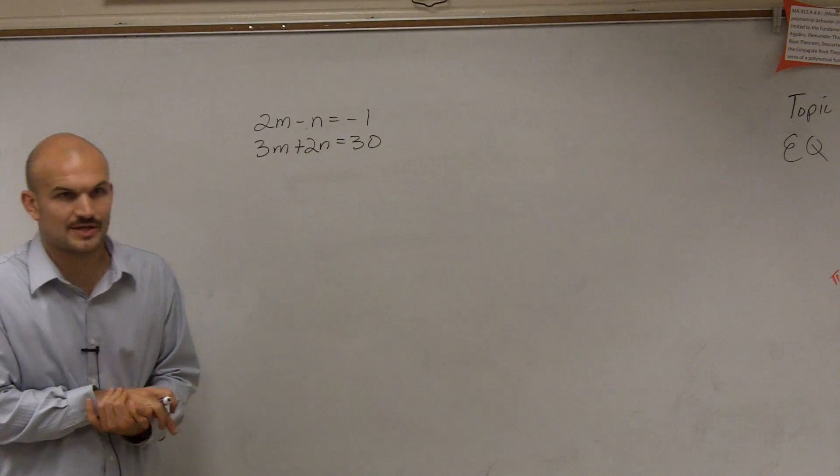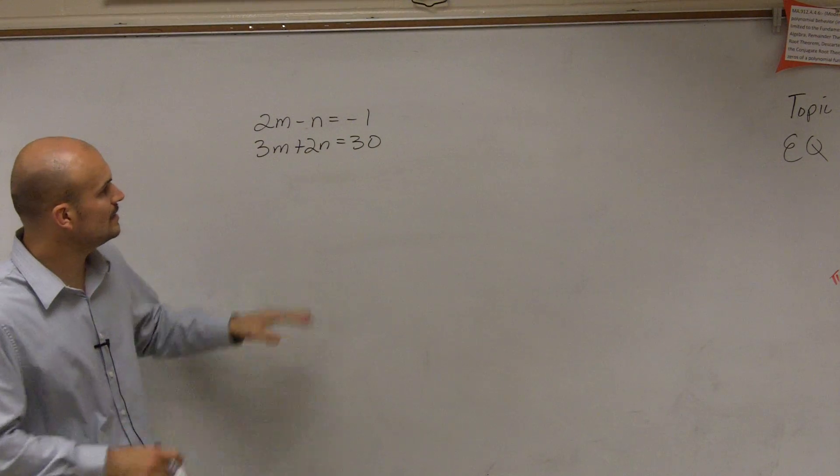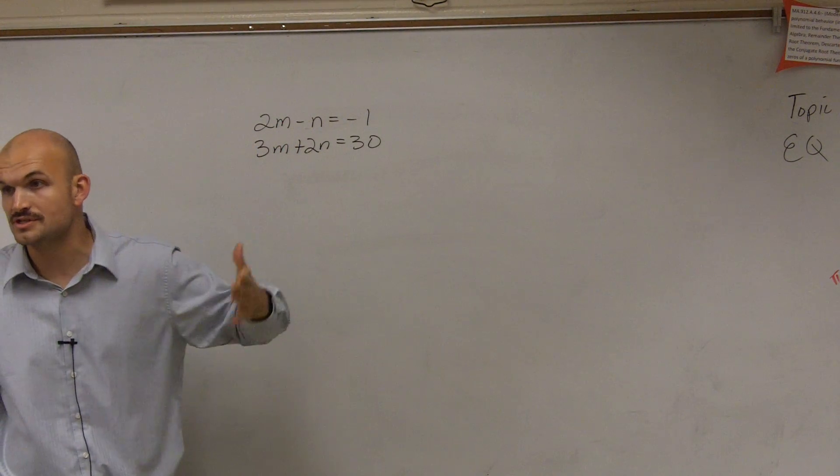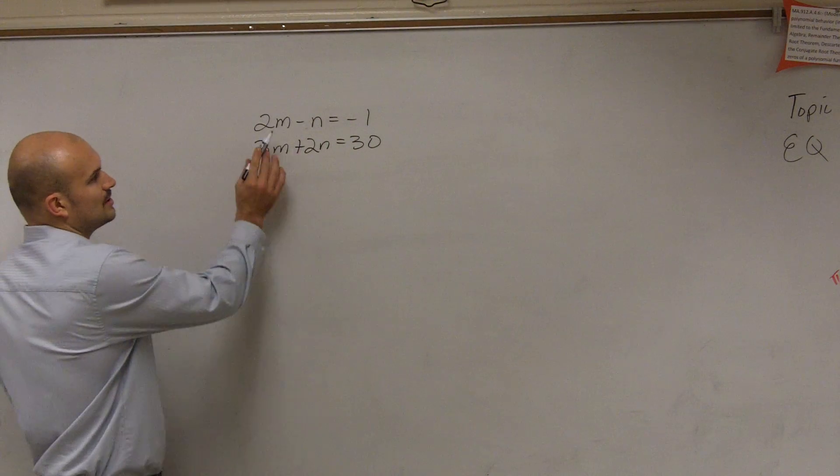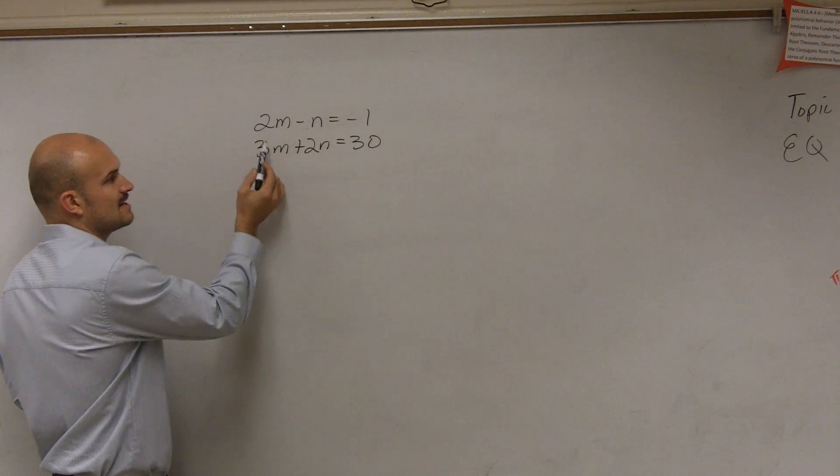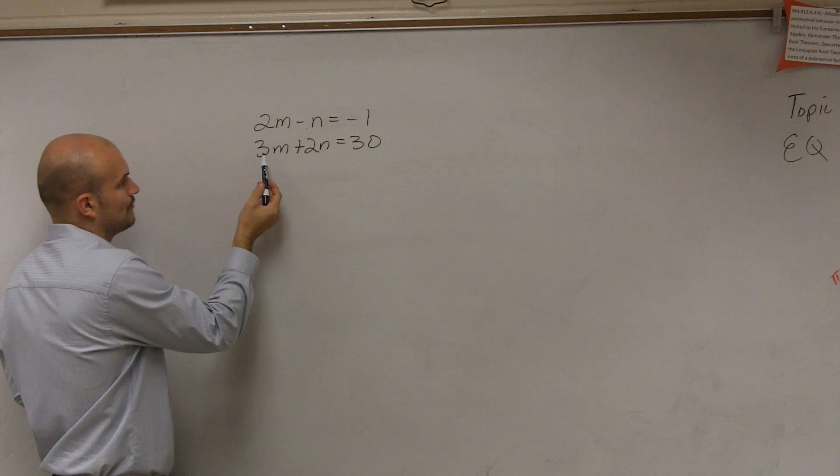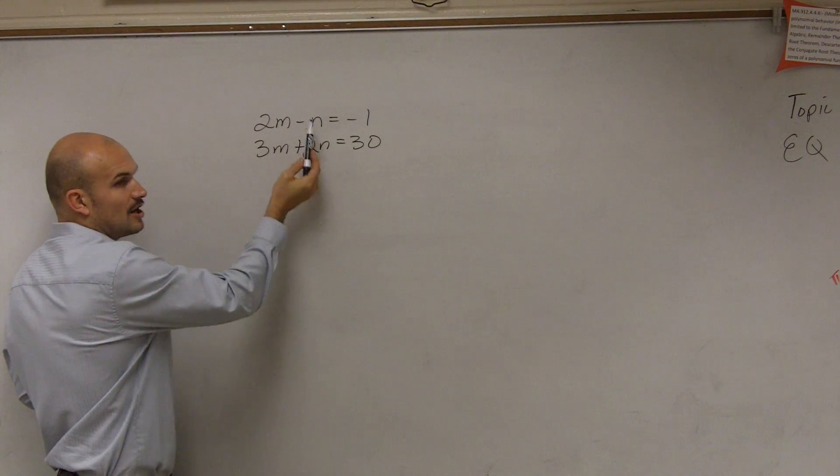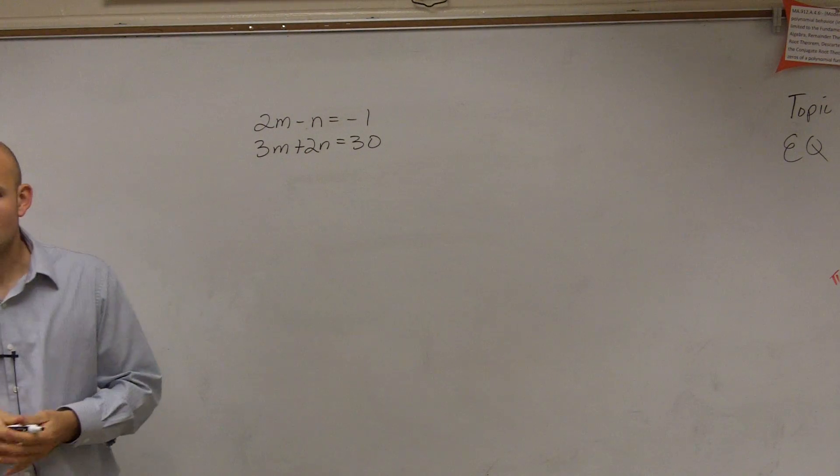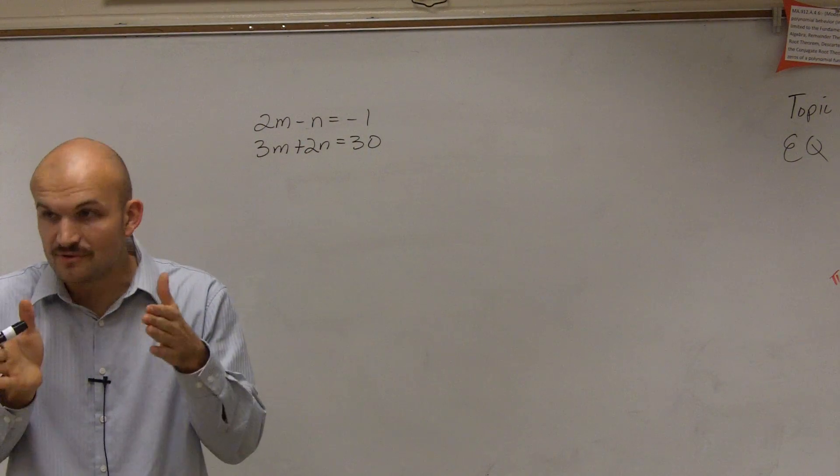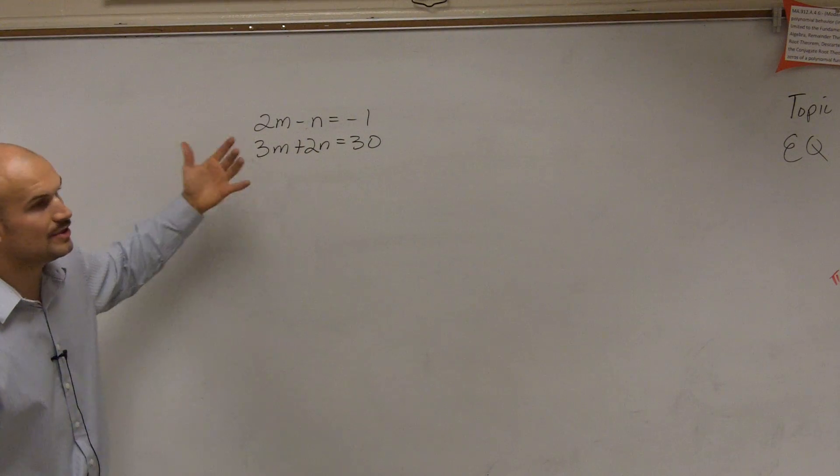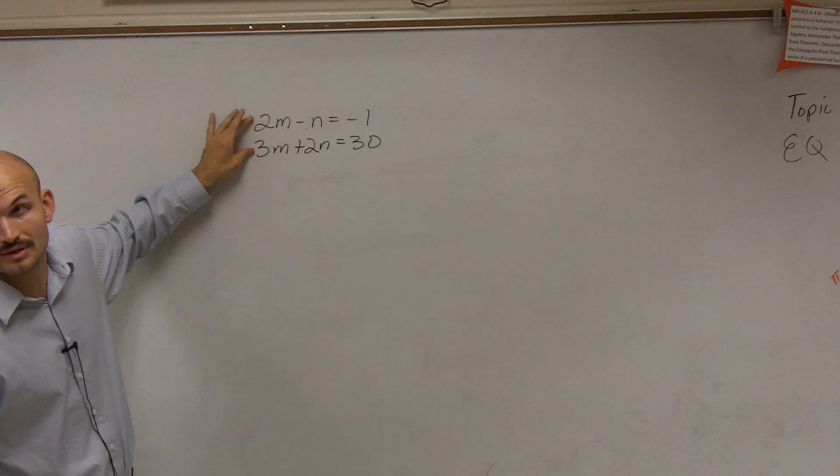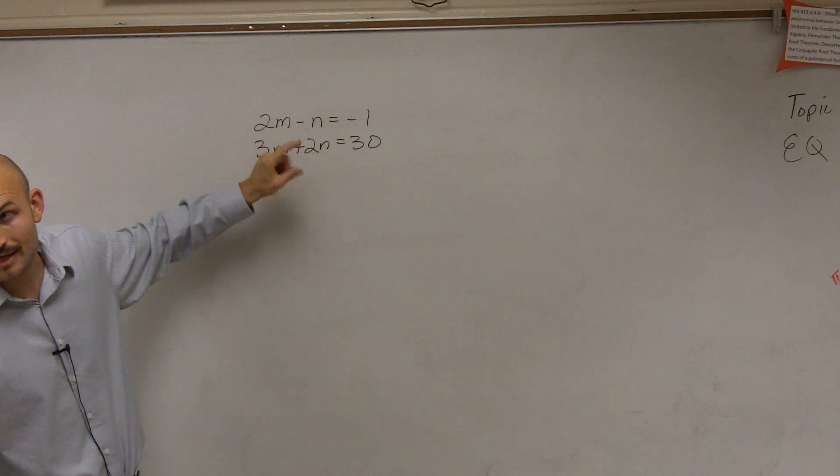What to do for elimination is we need to get the absolute value of the coefficients to be the same. If I look at the coefficients of m, do I have the same coefficients? No, that's a 2, that's a 3. If I look at the coefficients of n, are these two the same? No. I wanted the absolute value to be the same. We can either get these to be the same, which would be the least common multiple, or we could get these to be the same.